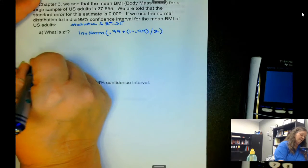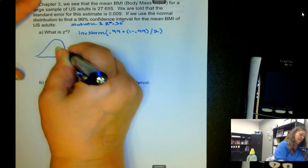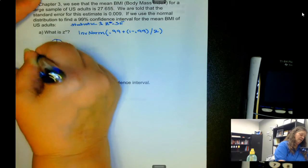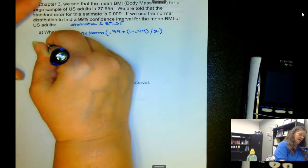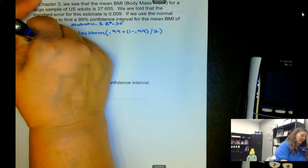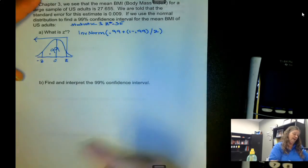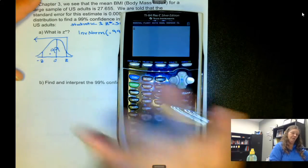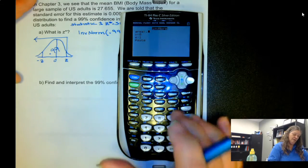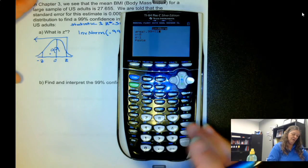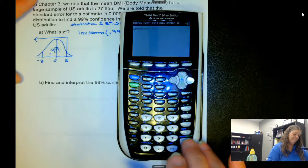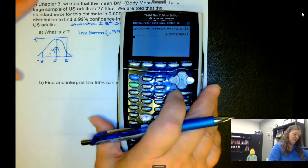So we need to use inverse norm 0.99 plus 1 minus 0.99 divided by 2. Because it's a 99% confidence interval, here's our positive z, here's our negative z, and the area in between is the 0.99. So we need that 0.99 plus what's in the left tail. Second vars down to option 3 for inverse norm 0.99 plus 1 minus 0.99 divided by 2. And we have 2.576.